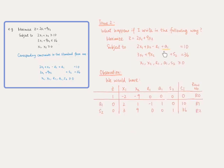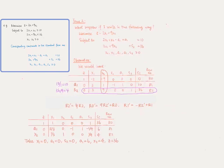Now, let us add the artificial variable to constraint 1 and proceed. Let's see if we come across other problems. When we have this objective function and these constraints, we get this tabular form. Observe that negative 9 is the most negative among the coefficients of variables in row 0. The column representing x2 will be the key column. Since the ratio 4 is positive but less than 10, row 2 is the key row.